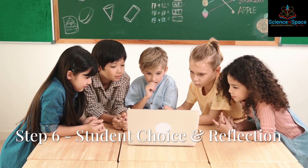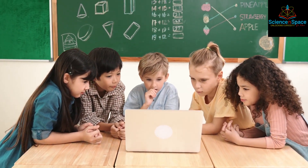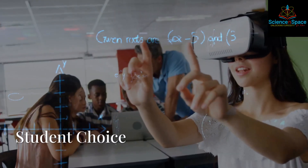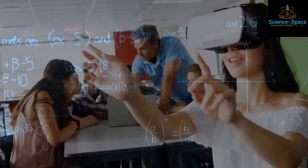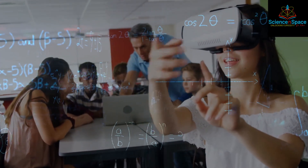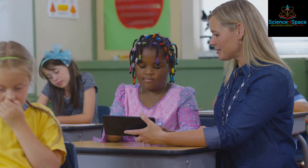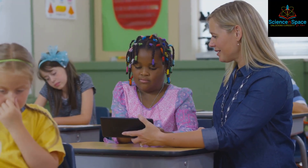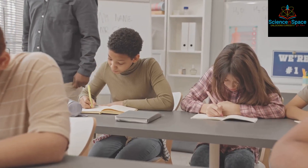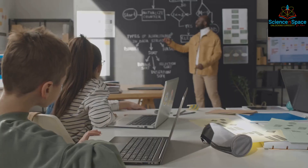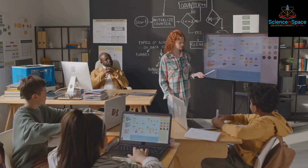Step 6: Include student choice and reflection. Personalized learning becomes a reality. Let students choose some of their math topics or projects based on interest. AI platforms that allow this help students see math as meaningful, not just mechanical. And don't forget — reflection builds metacognition. Ask students what they learned, and how they learned it.